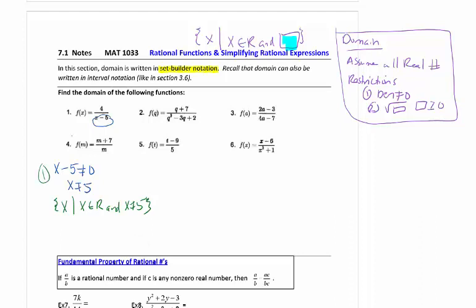So looking at number 2, we're looking again at the denominator. So q squared minus 3q plus 2 cannot equal 0. We're going to factor it. This is the same thing that you just did from 6.6. So my factors should be q minus 2, q minus 1 cannot equal 0. So if I solve the first one, q cannot equal 2, and the second one, q cannot equal 1.